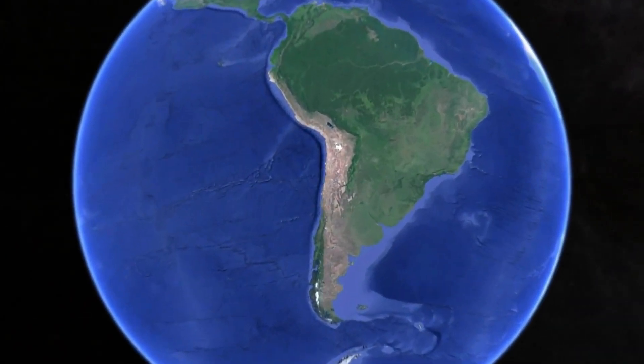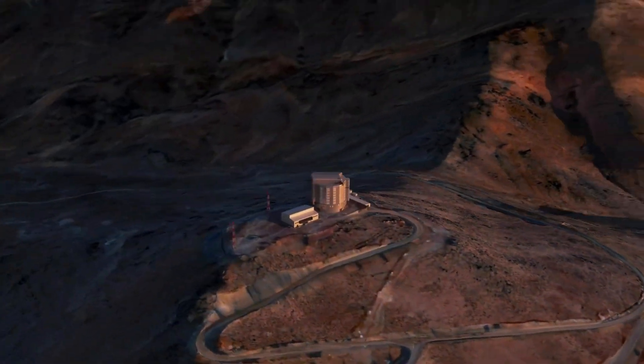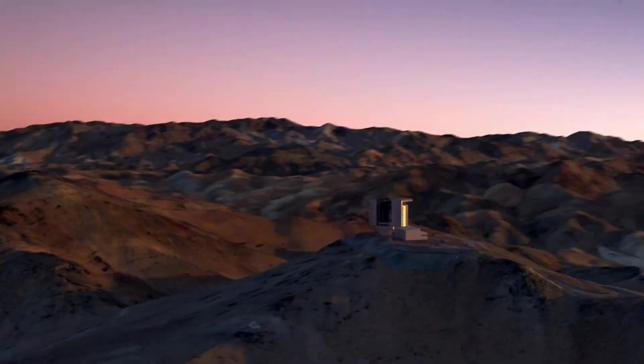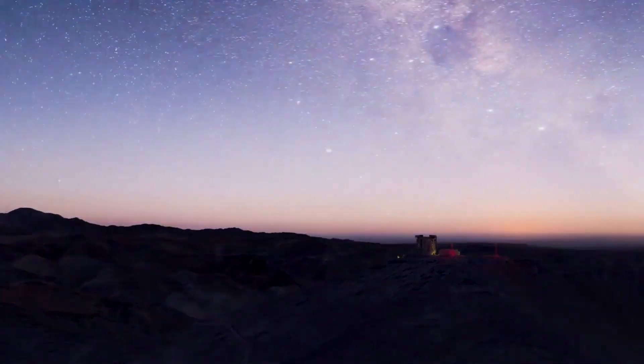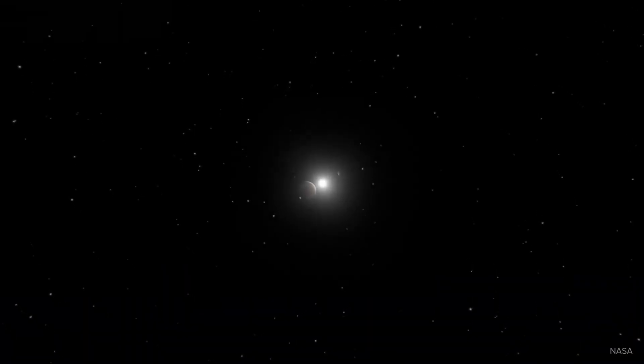Since the first telescope pointed at the sky, astronomy has transformed humanity's view of our place in the cosmos many times. In recent decades, telescopes have shown us that planets are ubiquitous around the stars in our galaxy.